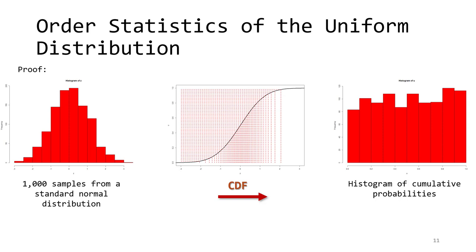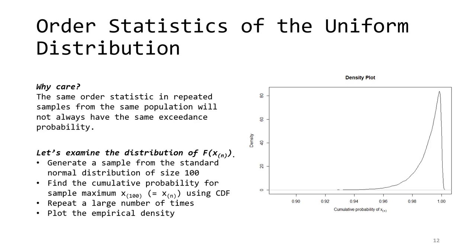Once you convert them into CDF values by reading off the y-value for each data point on the curve, you can see that the shape of the data changes. They are much more regularly spread out along the y-axis. We see the histogram of the CDF values on the right side, which have a little bit of noise, but definitely don't look bell curve shaped anymore. With a large enough sample, this histogram would have the same height in every bar, indicating a uniform distribution.